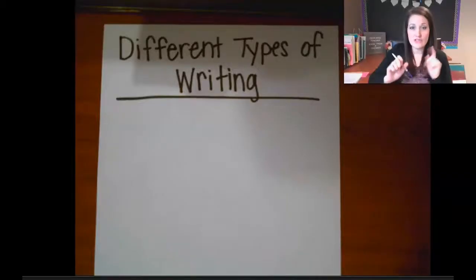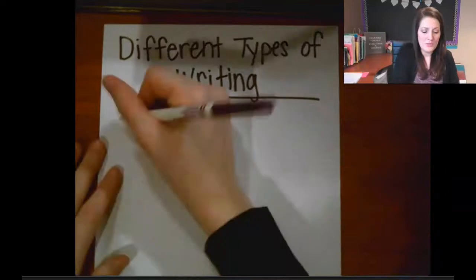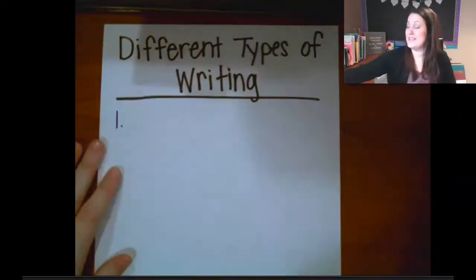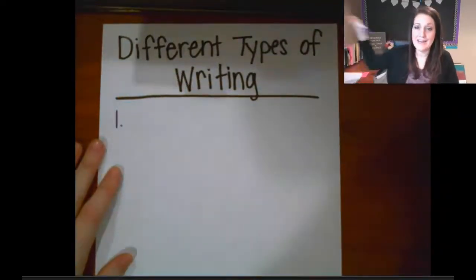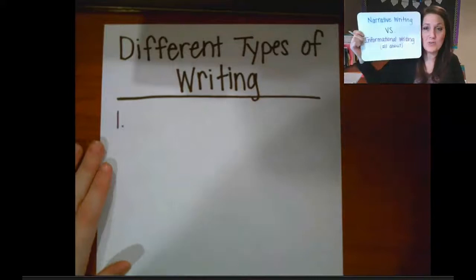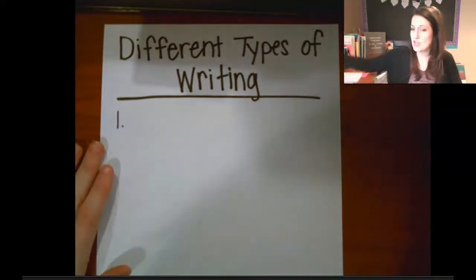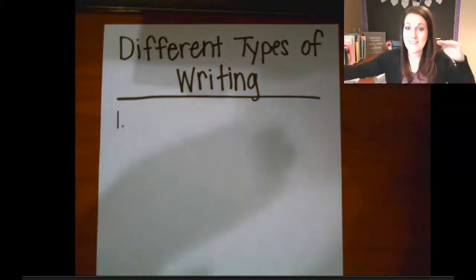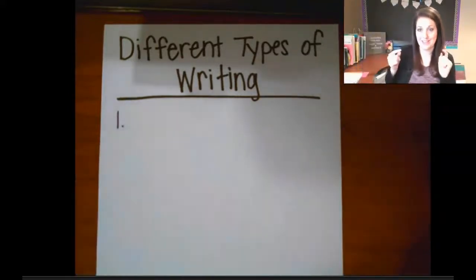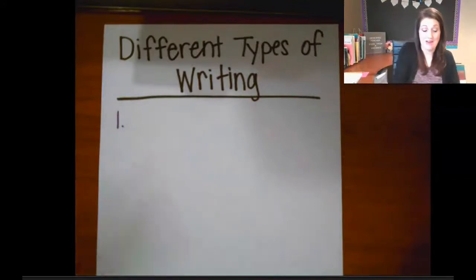So the first type of writing that you could include would be the one we actually talked about at the very beginning of this unit — narrative versus informational writing. You can have a narrative in your informational writing.